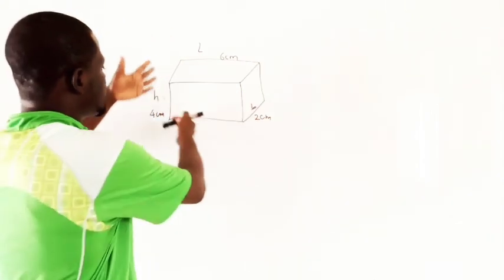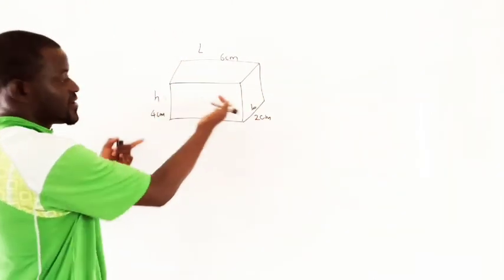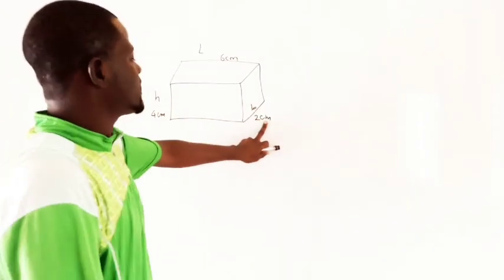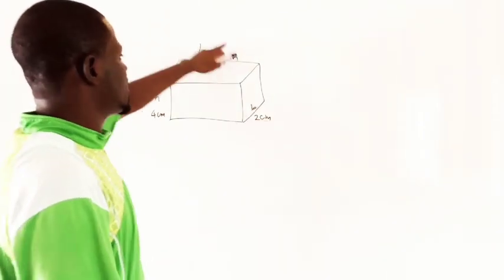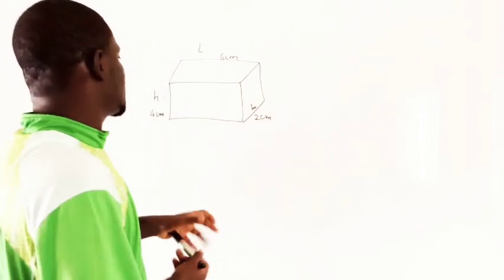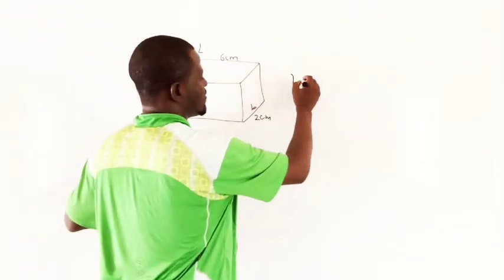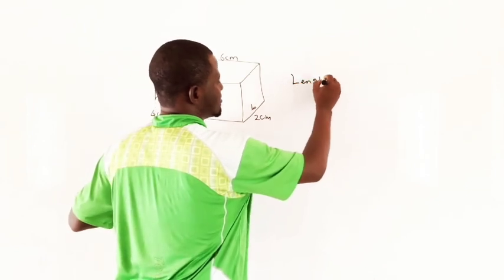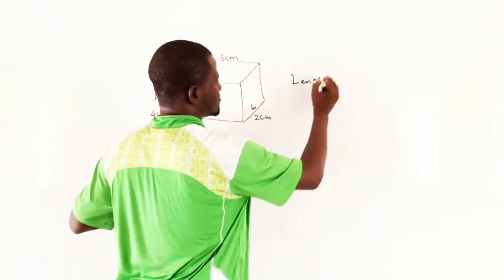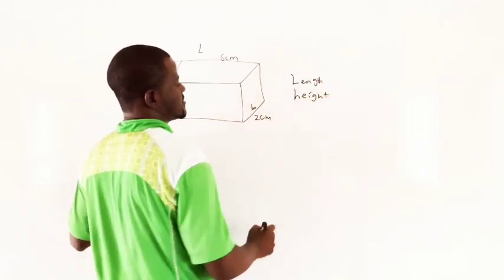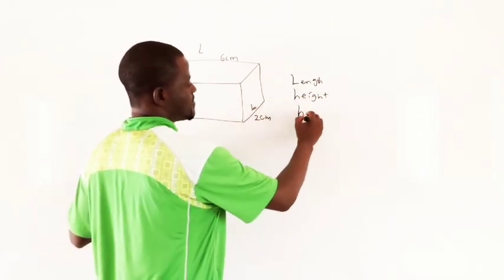Now here we have the diagram on the board. We have 4 cm here, we have 2 cm, and we have 6 cm. Now you will see these letters. The L here stands for length, the H is the height, and B here is the breadth.